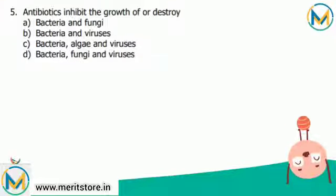Antibiotics inhibit the growth of or destroy — what? An antibiotic is a chemical substance produced by a microorganism that can kill or inhibit the growth of other microorganisms such as bacteria and fungi, and is thus used to treat bacterial and fungal infections. It kills bacteria by causing the cell walls to disintegrate. Thus the correct answer is option A, that is bacteria and fungi.